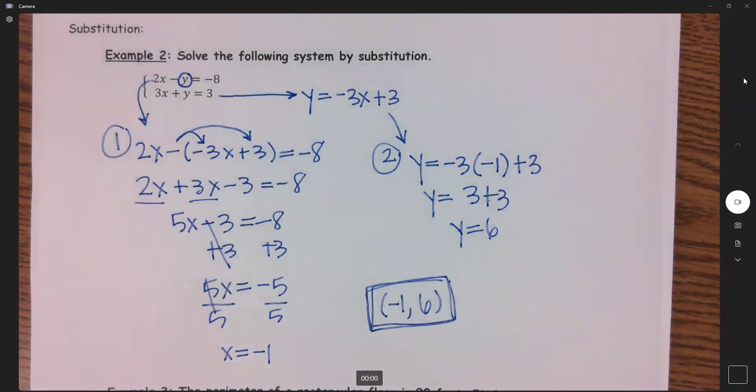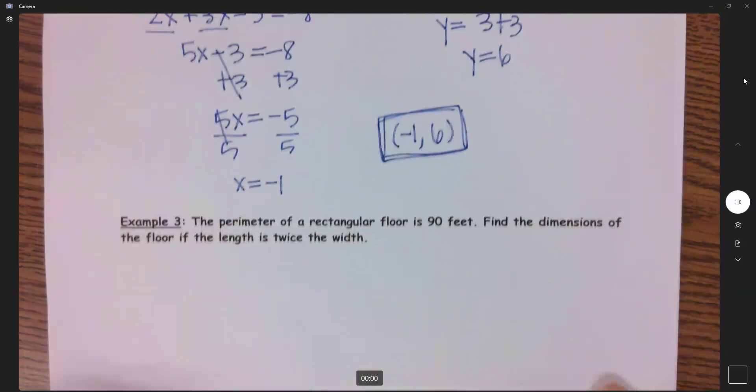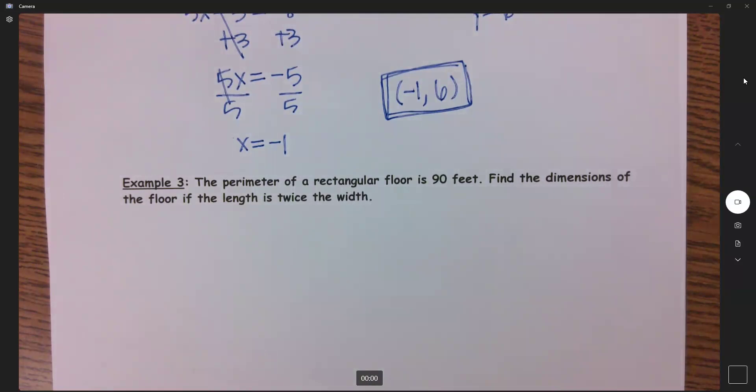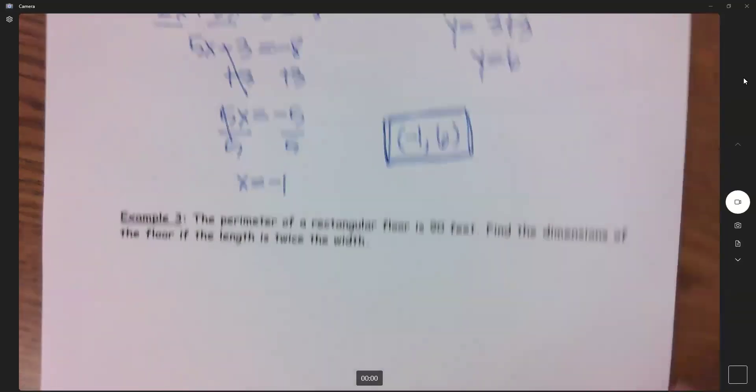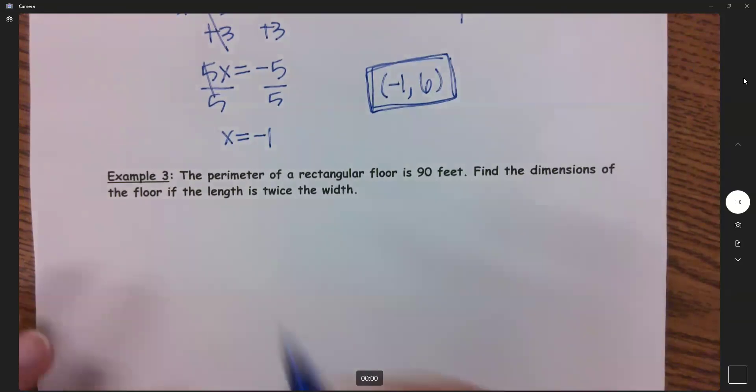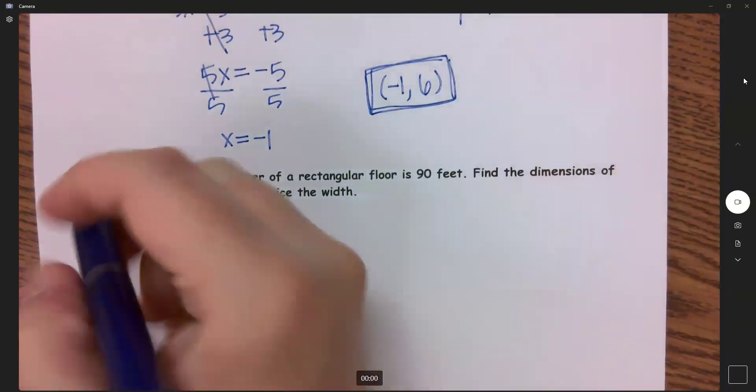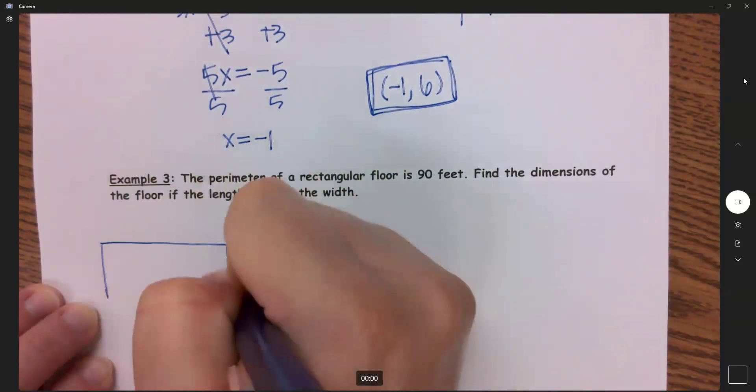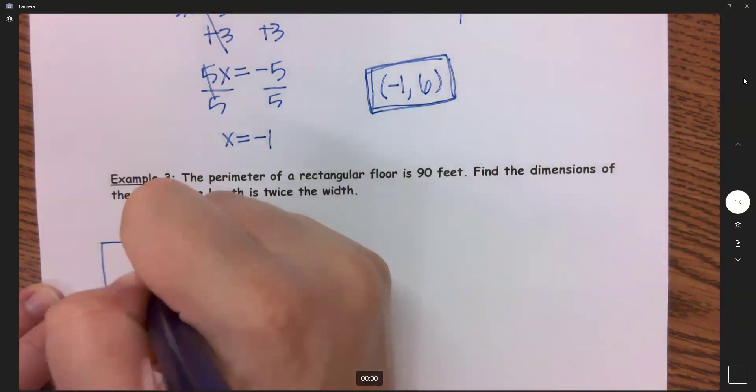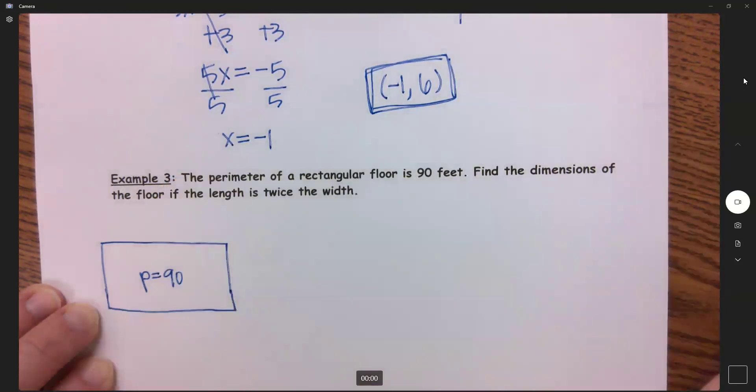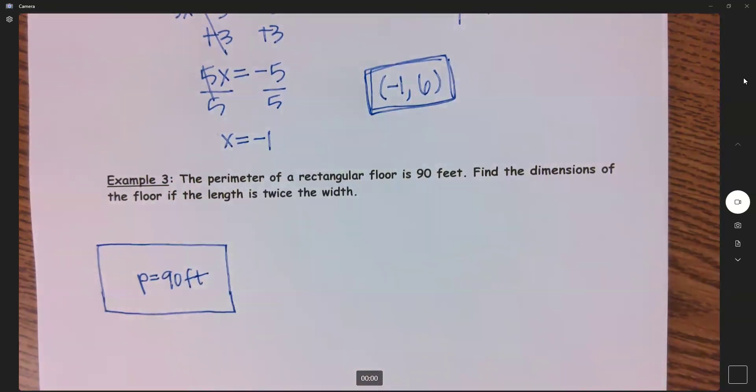Now let's do one application problem here. The perimeter of a rectangle floor is 90 feet. Find the dimensions of the floor if the length is twice the width. Okay, so let's just kind of review back to our geometry days here. If I have a rectangular floor and the perimeter here is 90 feet. Okay, perimeter is what?